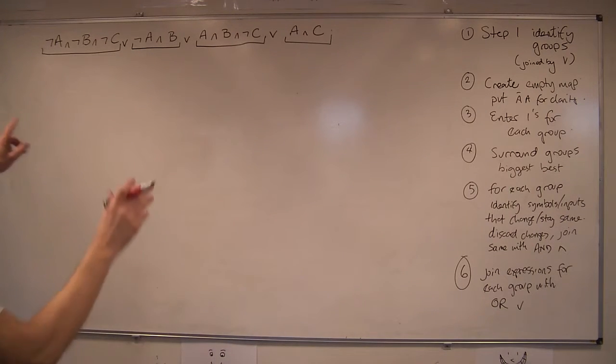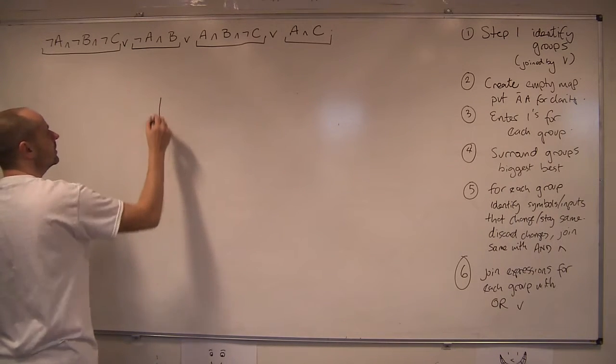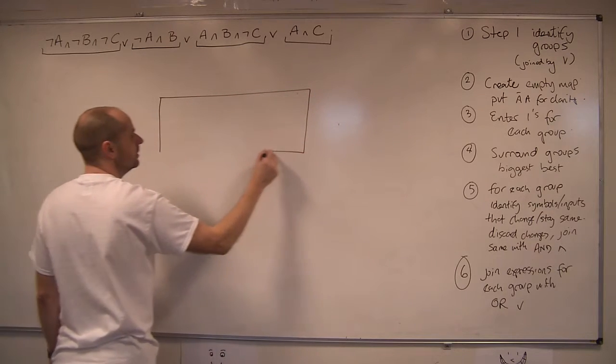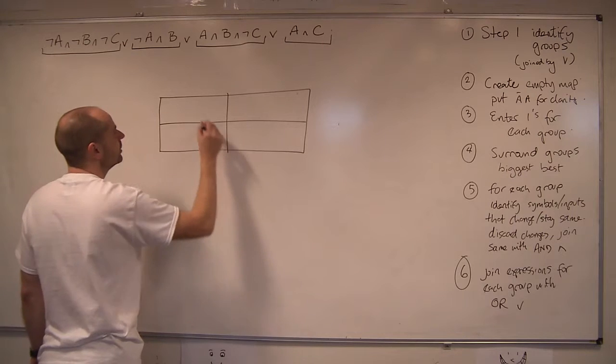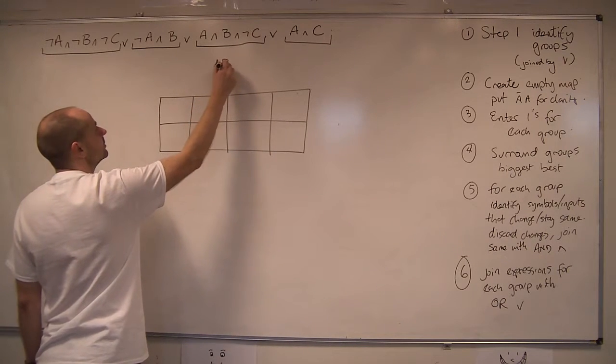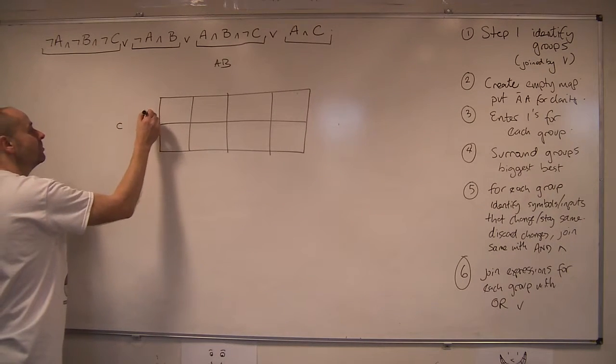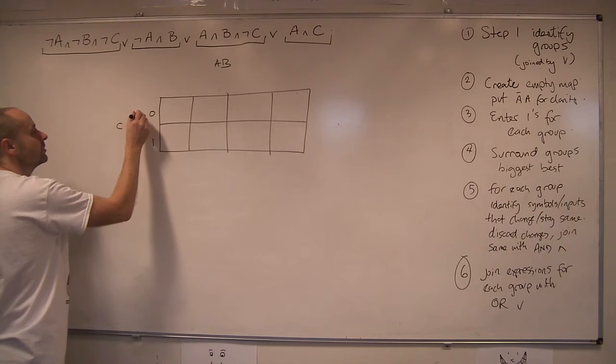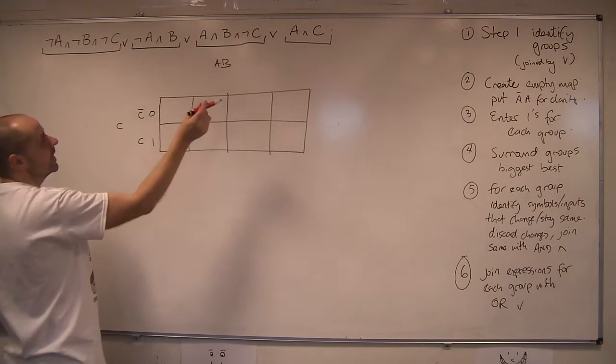Right, we've got three inputs, A, B, C. So we need a rectangular map this time. So I'm going to do A and B across the top, just for the traditional sense. And I'm going to do C in the rows. Okay. So that's going to be naught and one. So just to help myself, that's going to be naught C, and C.